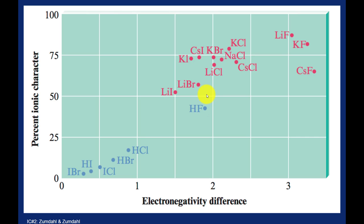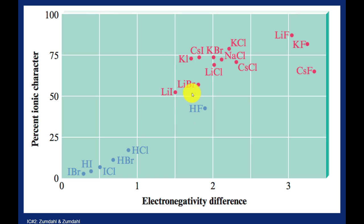By differences in electronegativity, we would consider these bonds to be polar covalent, just like hydrogen fluoride. However, these are combinations of metals and non-metals, which we said earlier makes an ionic bond. So which is it — are these bonds ionic or are they polar covalent? The answer is, this is the gray area. I would consider these bonds to be ionic: we have a metal combining with a non-metal, metals like to lose electrons, non-metals like to gain electrons, and that's our definition of an ionic bond — a transfer of electrons.